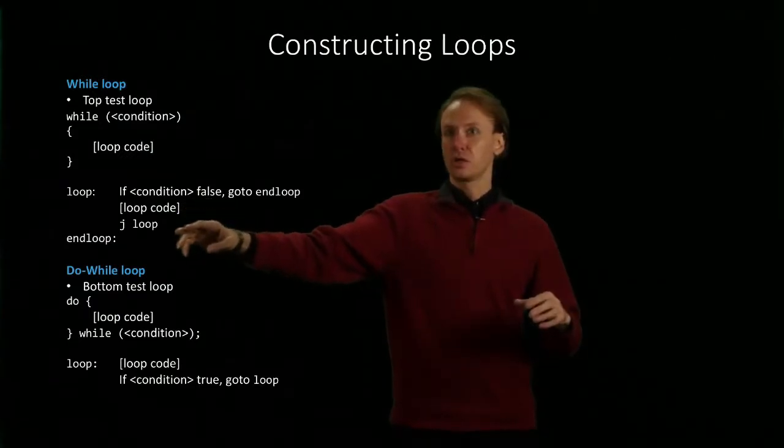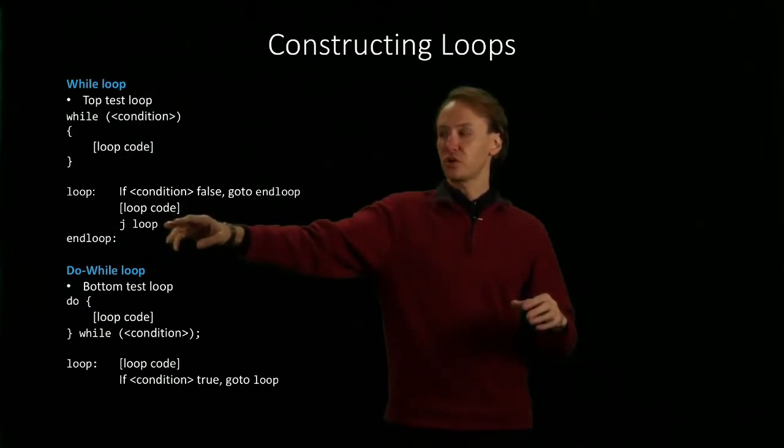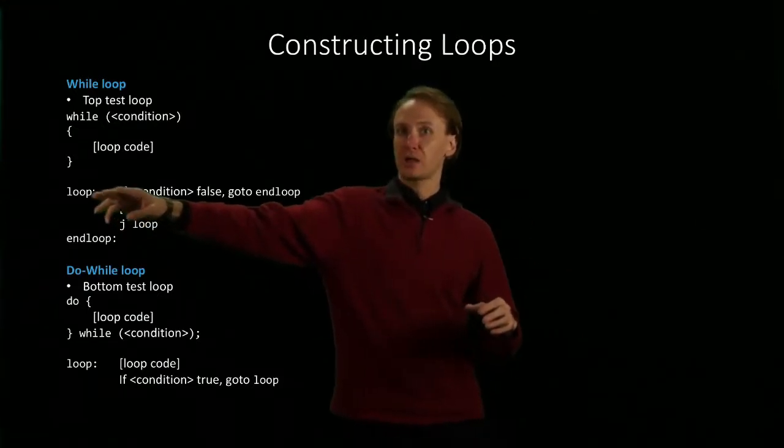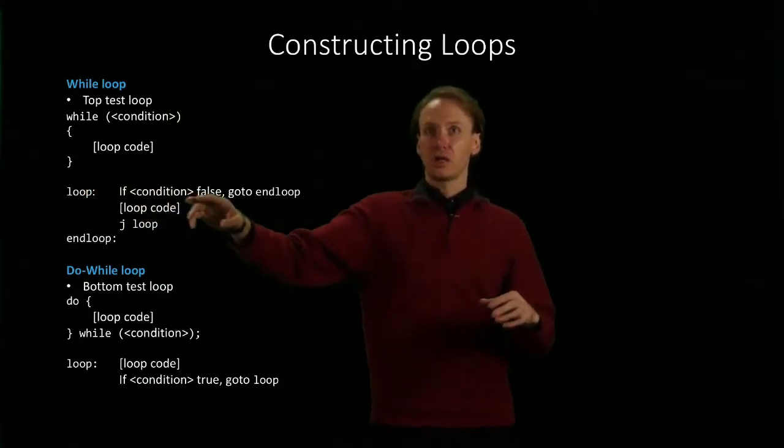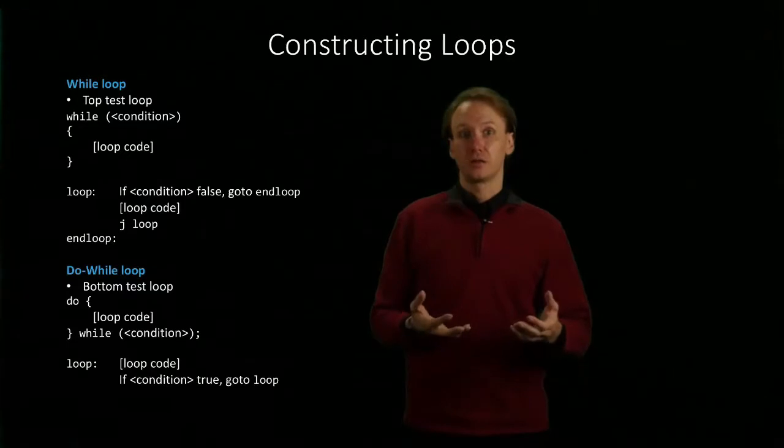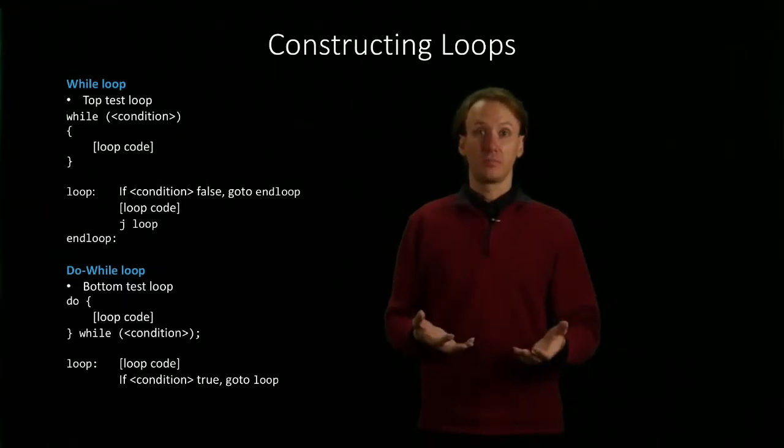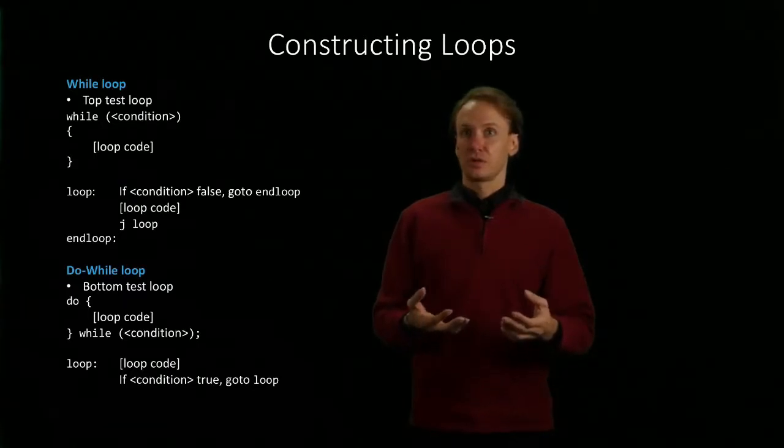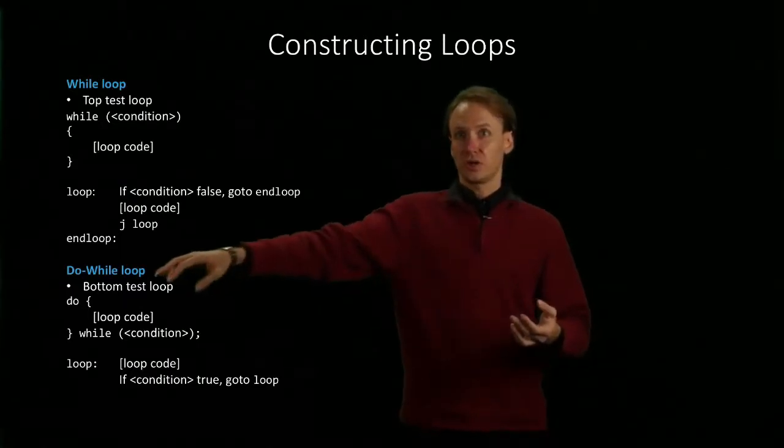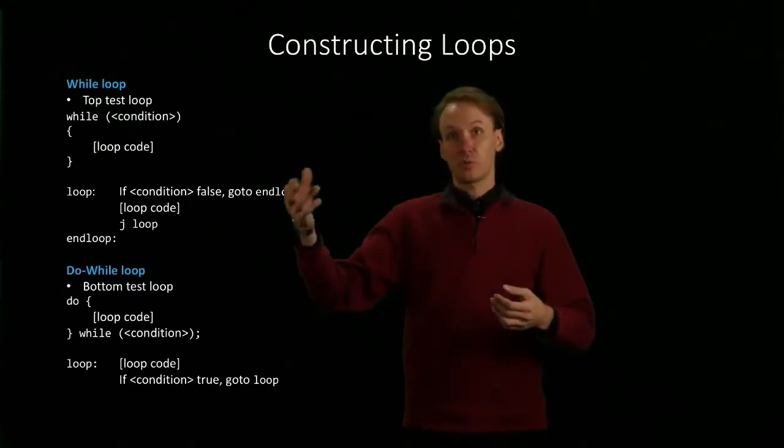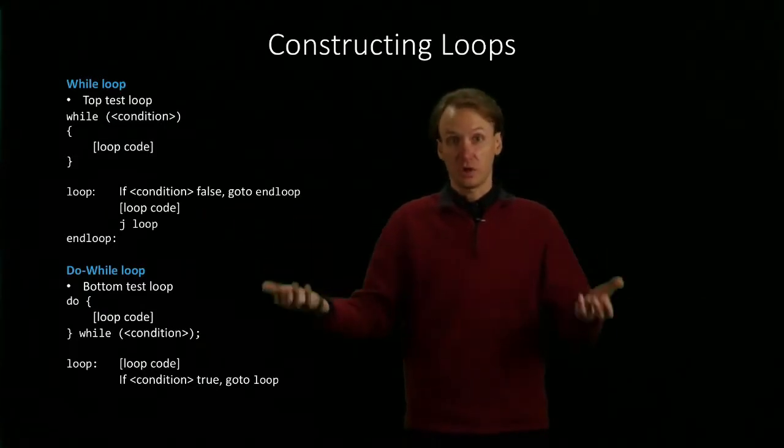Once it's run all of this code, it will get to this jump loop instruction, which tells it to go back to this label and run the test again to determine whether it needs to run the loop body another time. If the condition is false, we go to the end loop label. Otherwise, we run the body of the loop again.